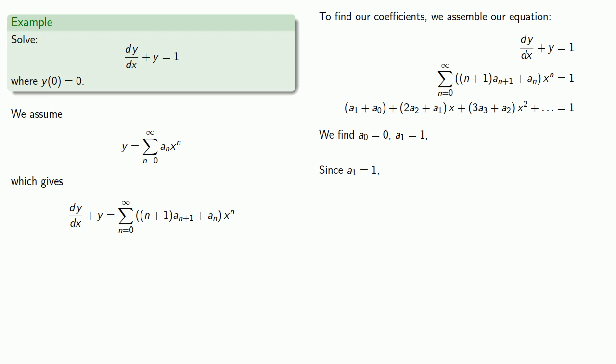Again, our left- and right-hand sides have to be equal. On the left, our coefficient of x is 2a2 plus a1. On the right, our coefficient of x is 0. And so this gives us the equation, which we can solve for a2.